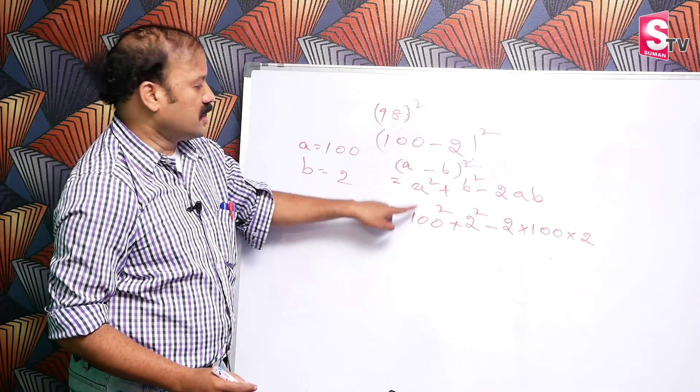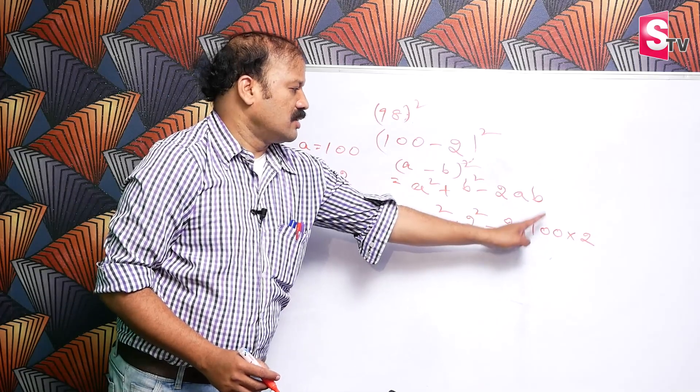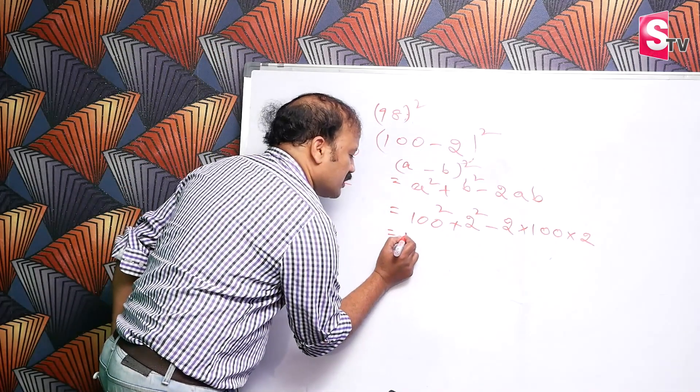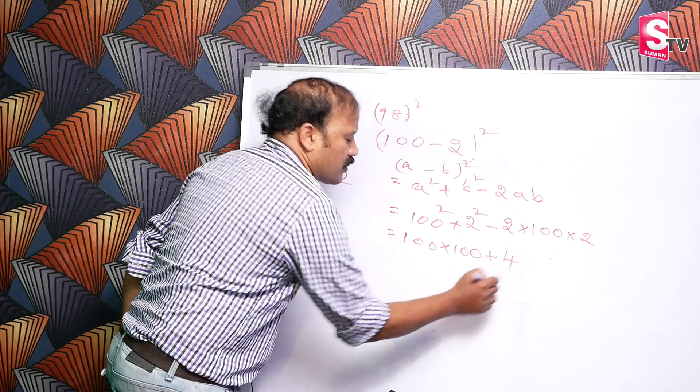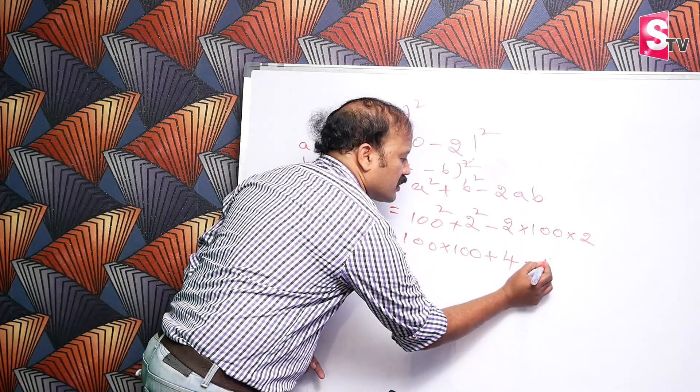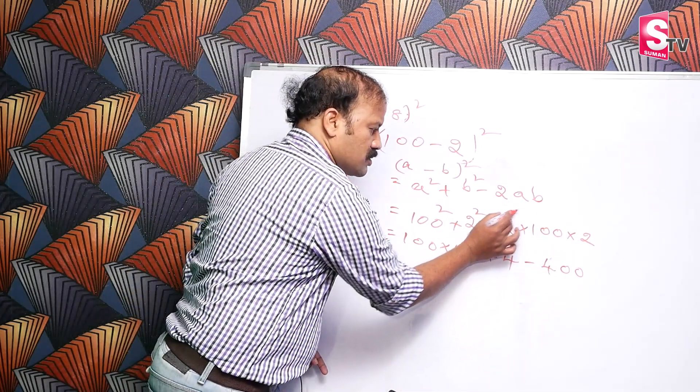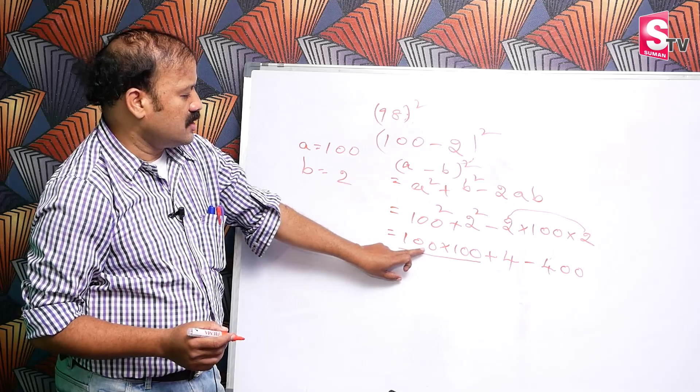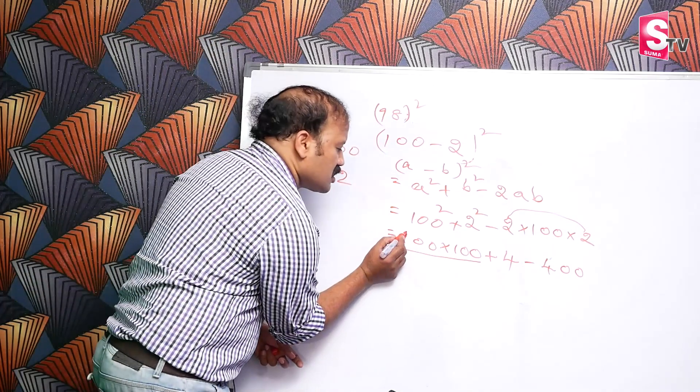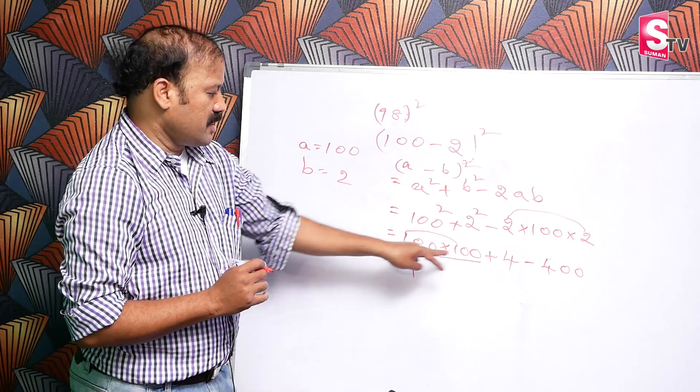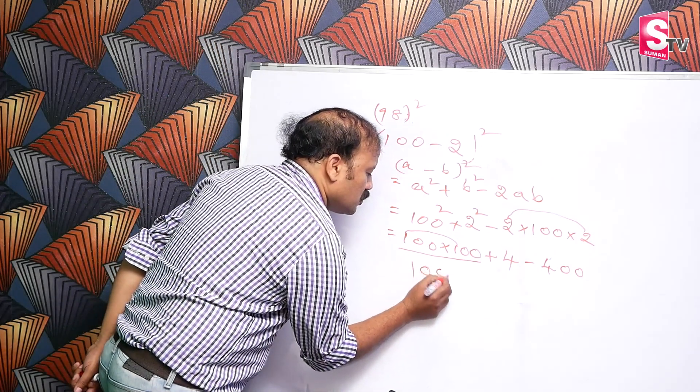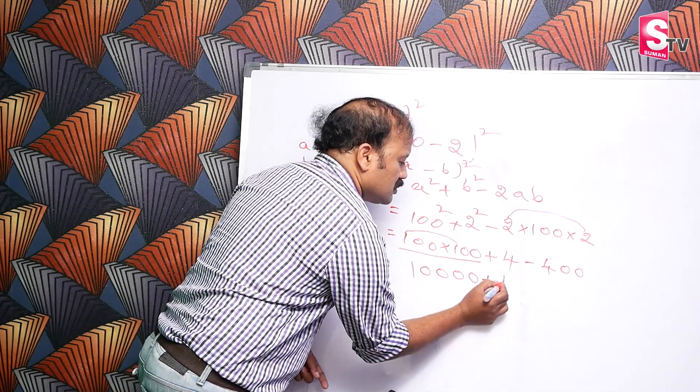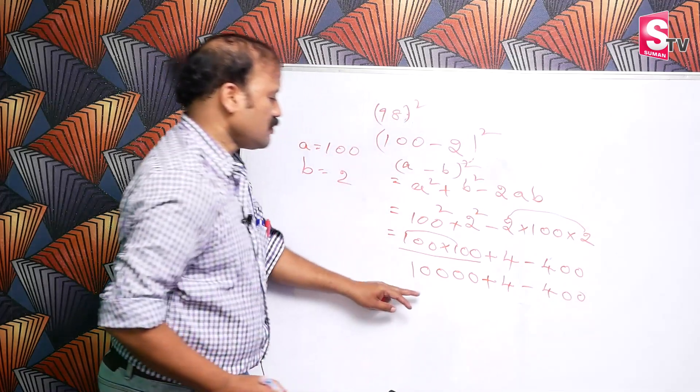Formula substitution: a value 100, b value 2. 100 square: 100 into 100, plus 2 squared is 4, minus 2 into 100 times 2 is 400. 100 into 100 multiplication: simply two digits, add zeros. 1 times 1 equals 1. How many zeros in one number? Total 4 zeros: 1, 2, 3, 4. What is this value? 10,000 plus 4 minus 400.